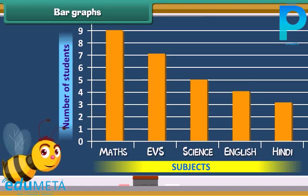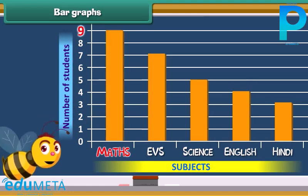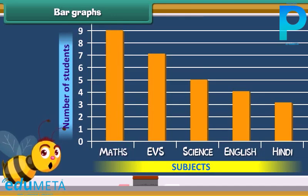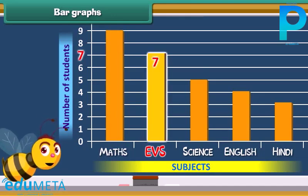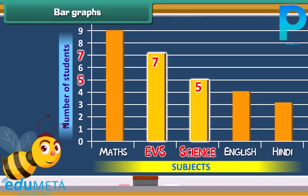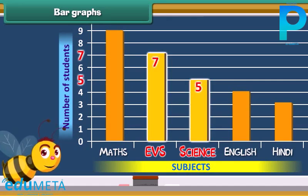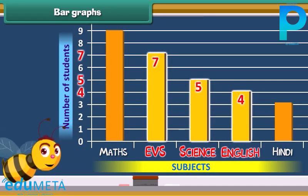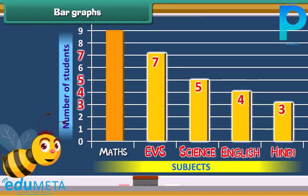In this graph, 9 blocks tell us about the number of students who like maths. Similarly, there are 7 blocks in EVS, 5 blocks in science, 4 blocks in English and 3 blocks in Hindi.